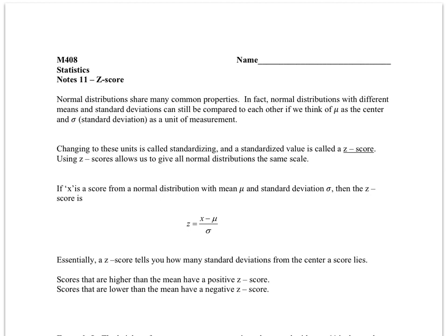Normal distributions with different means and standard deviations can still be compared if we think of μ as the center and σ as a unit of measurement. We standardize these units and create what is called a z-score. The z-score allows us to give all normal distributions the same scale.